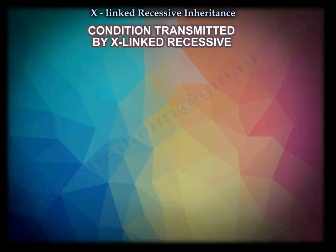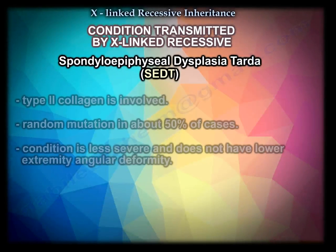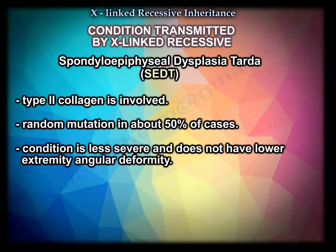The last condition is SED tarda, called Spondyloepiphyseal dysplasia tarda — or spinal epiphyseal dysplasia, just for the sake of remembering it. Type 2 collagen is involved. Random mutation occurs in about 50% of cases. It is less severe and does not have the same lower extremity angular deformity.